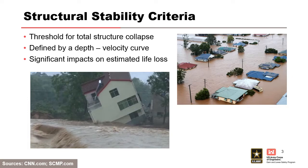Why is this important? The stability of a house in the lower left-hand corner is much different than the stability of houses in the top right corner. In the top right, there's relatively high depth but low velocities, so people might be able to evacuate up onto the roof or even swim out. In the bottom left picture, water is rushing by, the structure is on the verge of collapse and being washed away — a very dangerous situation for any occupants.